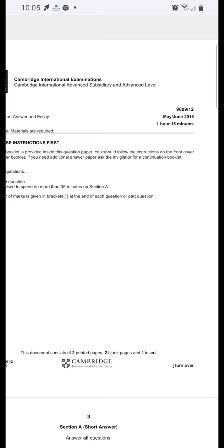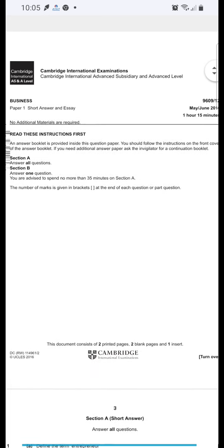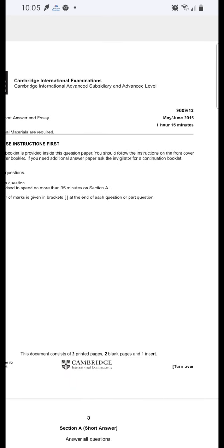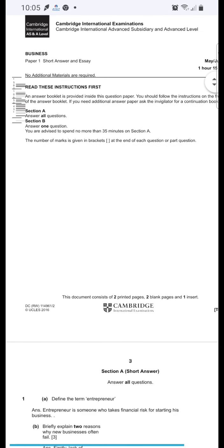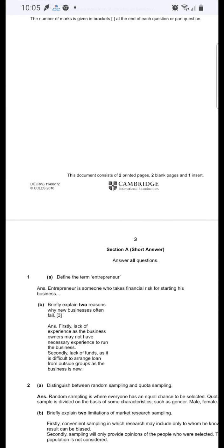This is the paper which is 9609 code 12, means paper 1 variation, and it's from June 2016. 1 hour 15 minutes is the time and there are 40 marks in it.